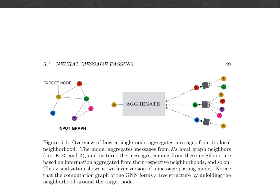Here is how a single node aggregates messages from its local neighborhood: the model aggregates messages from A's local graph neighbors — B, C, and D — and in turn, messages from those neighbors are based on information aggregated from their respective neighborhoods, and so on. This means a two-layer message passing model works as shown in this figure. The iteration rule for updating hidden embedding H_u^k transitioning to iteration K+1 involves taking the previous hidden representation along with some form of aggregation over the hidden states of the neighboring nodes.